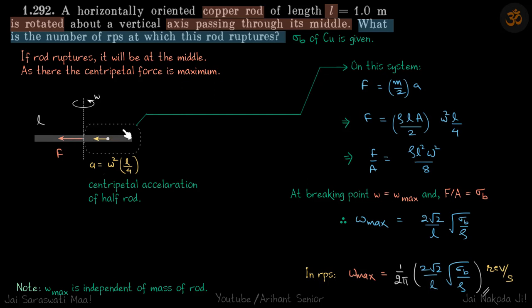So in that rod, every part is rotating. So the maximum centripetal force will be at the center, because about the center only, maximum part of the rod is rotating. So I hope that is clear.